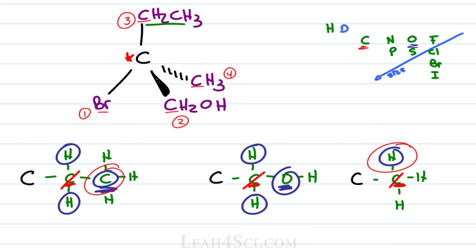Step one, rank. Step two, make sure number four is in the back, good to go. Step three, cancel out number four and now trace an arc from one to two to three. And in this case, it's counterclockwise. The top does not go to the right so it is not R, instead it is S.